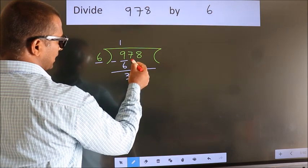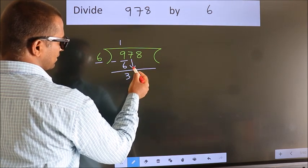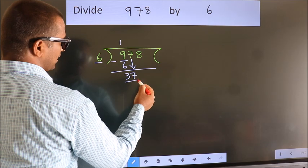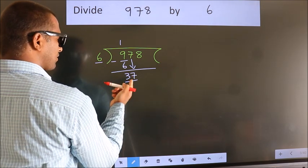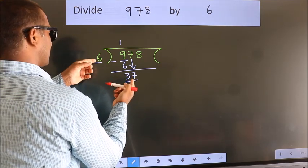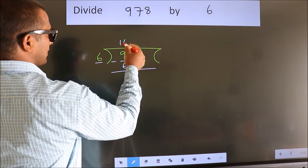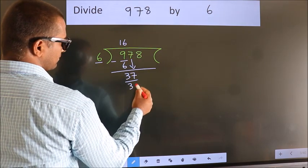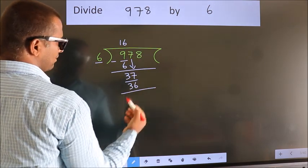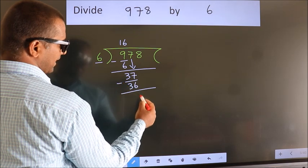After this, bring down the beside number. So 7 down, so 37. A number close to 37 in the 6 table is 6 times 6, 36. Now we subtract. We get 1.